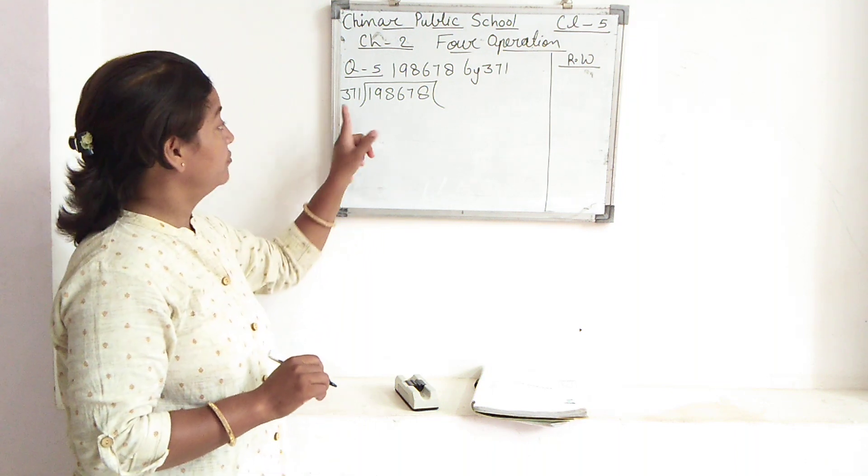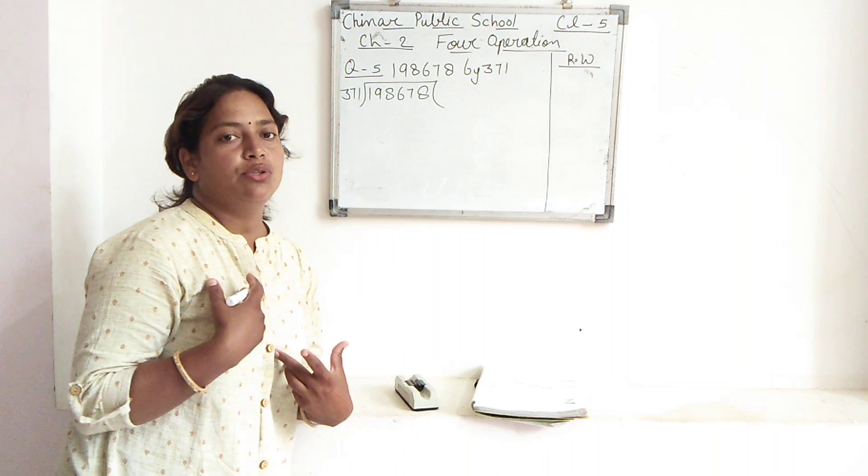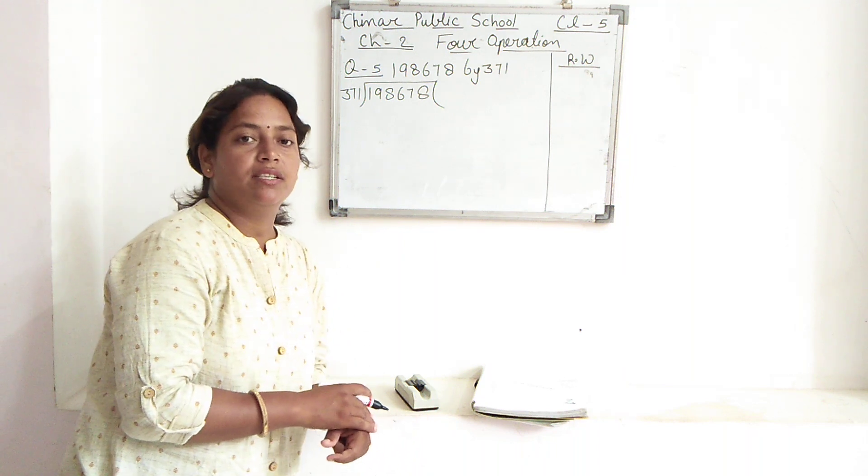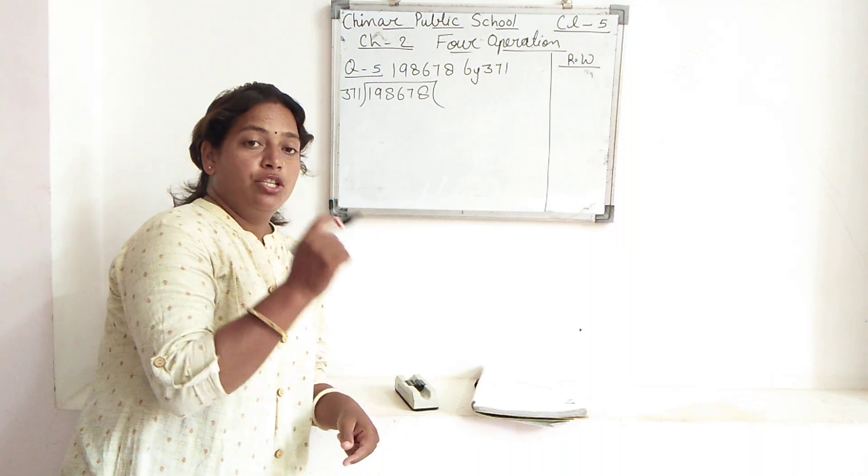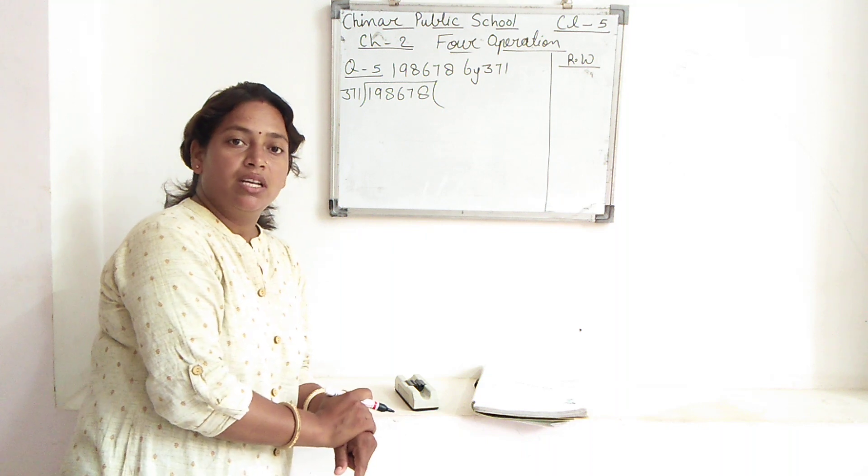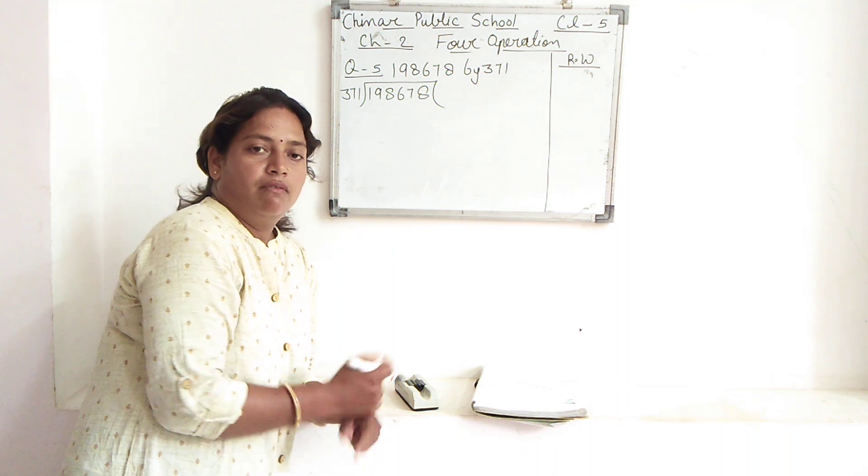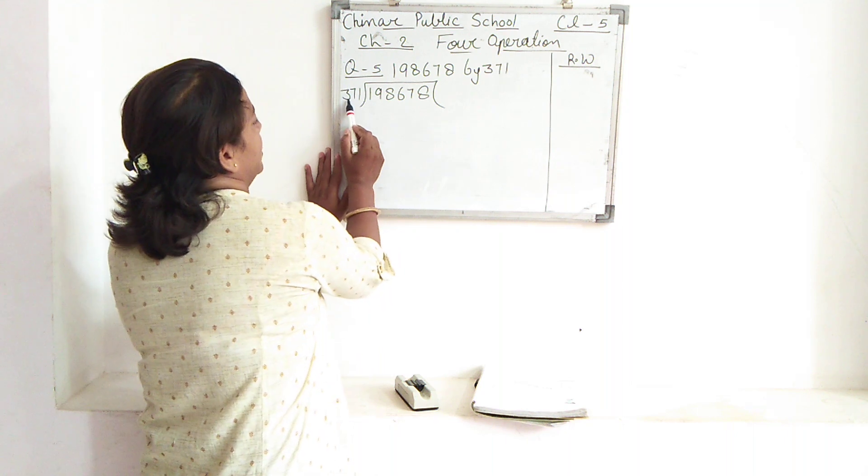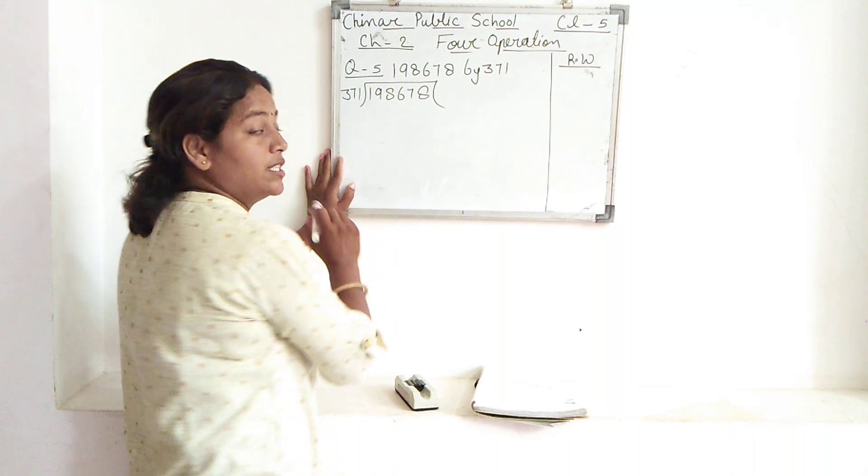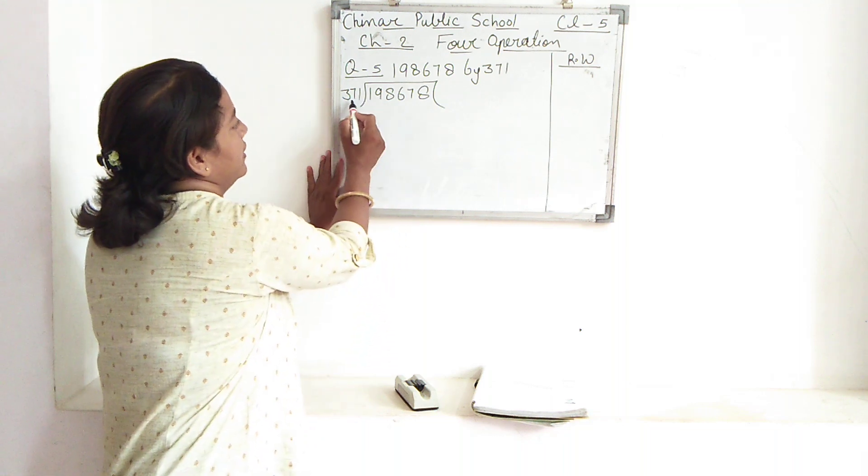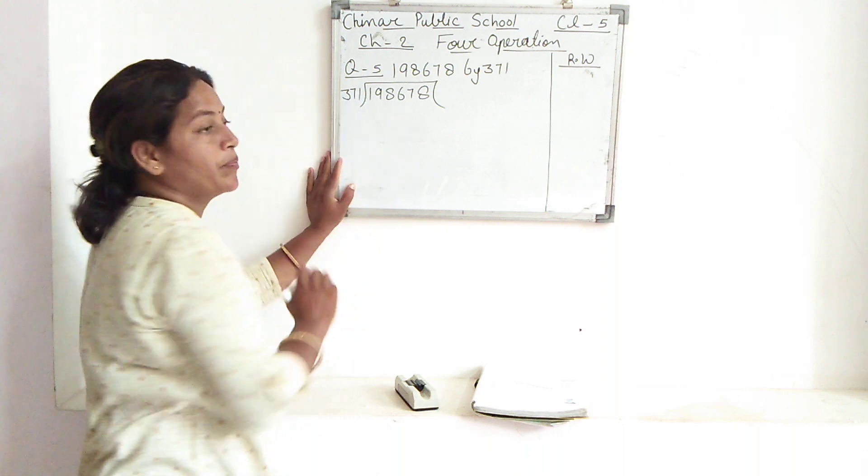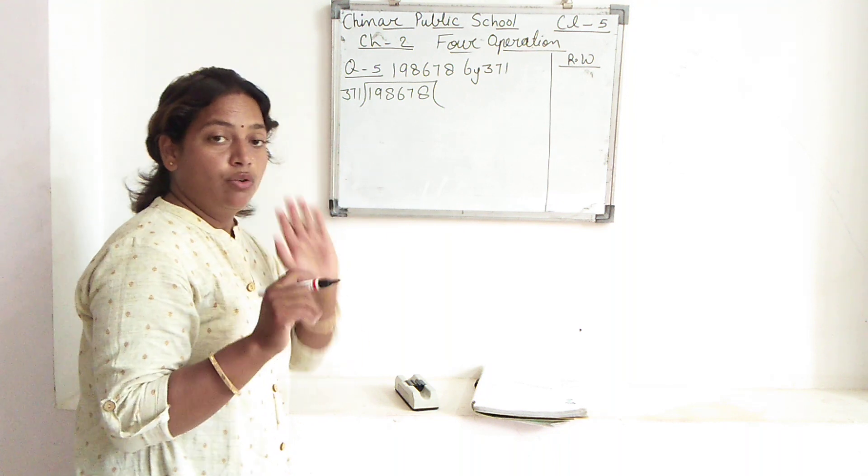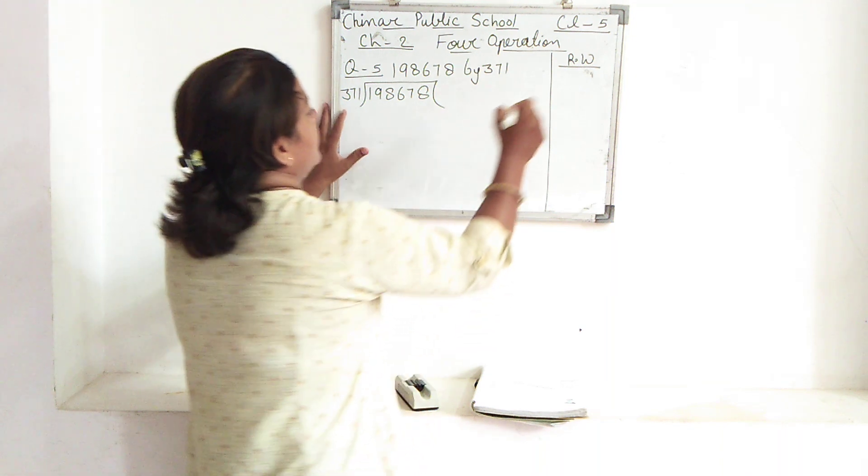So let's arrange this division here. To just recall in your mind the trick: 371, you don't know, I also don't know the table of 371, so we need to make the tables. Always make your calculation easier by applying some tricks. What is the first number here? 3. And what is here first number? 1. 1 is smaller than 3, so let's take one more number: 19.